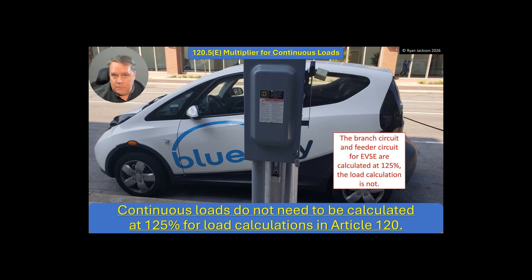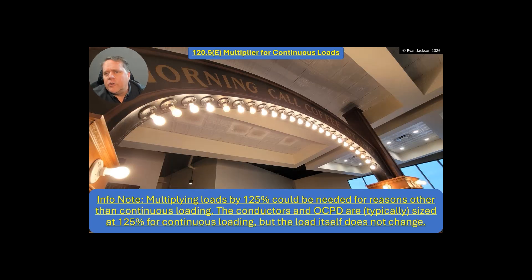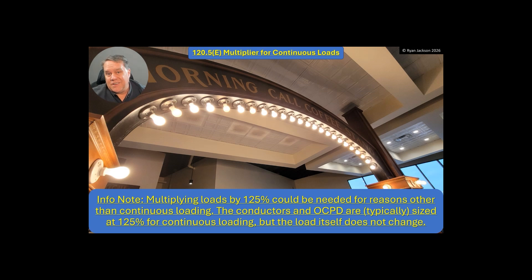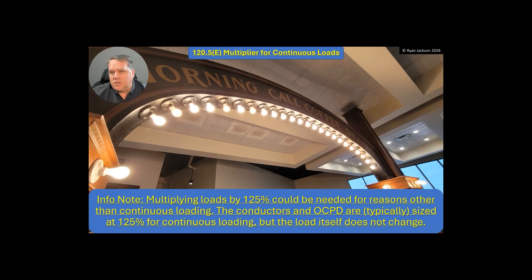They also added an informational note stating that multiplying loads by 125% could be needed for reasons other than continuous loading. A motor, for example — the motor needs to start, so you might have to size wires at 125%. Sometimes we do size things at 125%, but that's not necessarily for continuous loading. The conductors and overcurrent protective devices are typically sized at 125% for continuous load, but the load itself does not change in the load calculation.